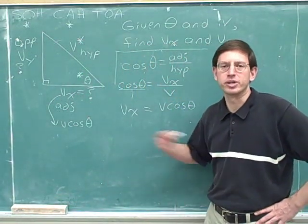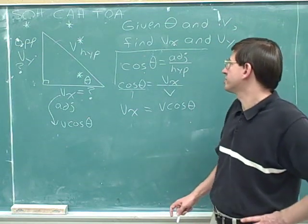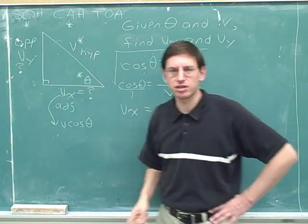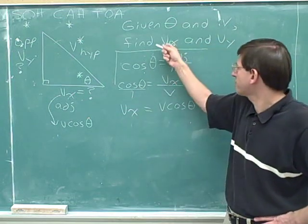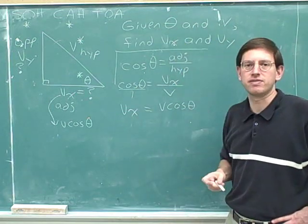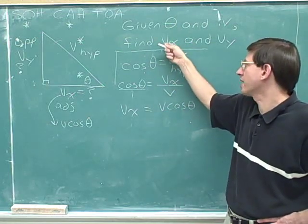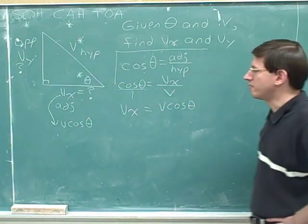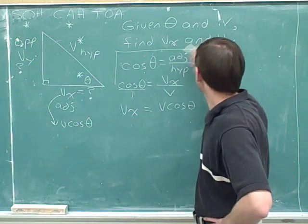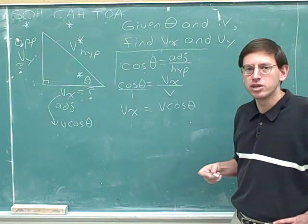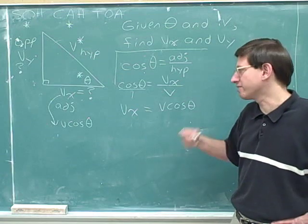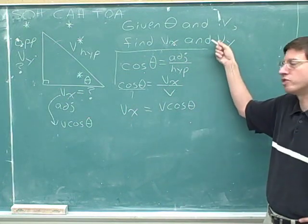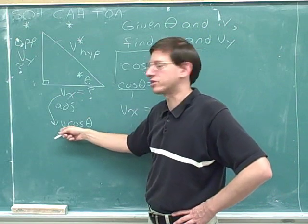There's no way we could get an actual number for our answer because we weren't given numbers — we were told to pretend we had numbers for theta and v. This is the conventional way to solve this type of problem: get an expression for v sub x using theta and v. We definitely would not want an answer that involves v sub y, because that was not something we were given. Our answer has to be in terms of the givens: theta and v.